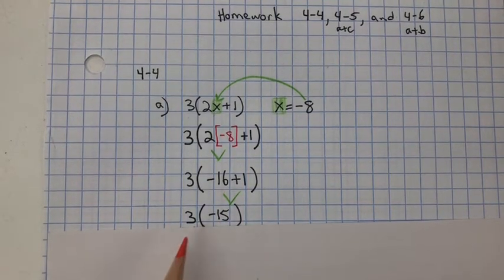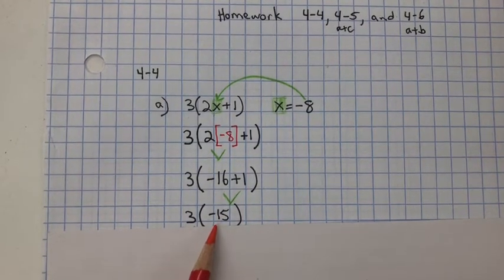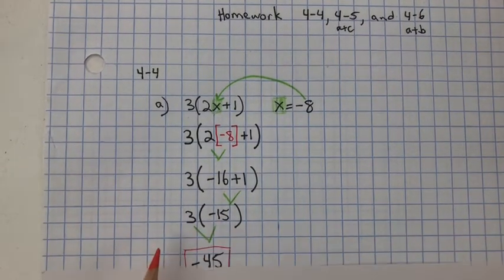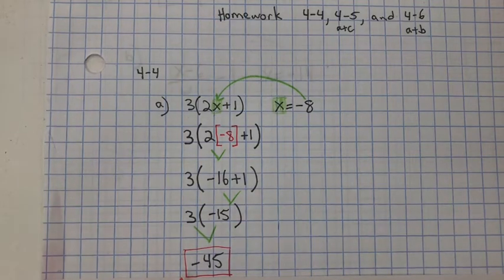Now we multiply. 3 multiplied by negative 15 is negative 45.